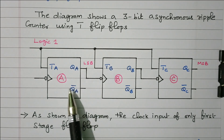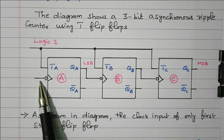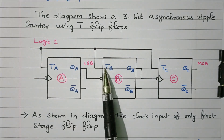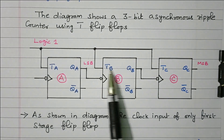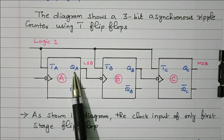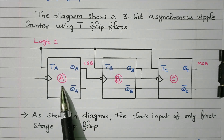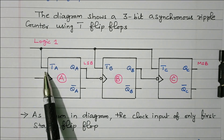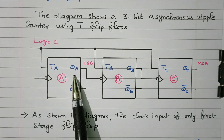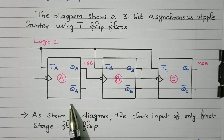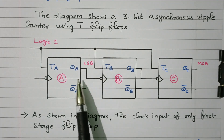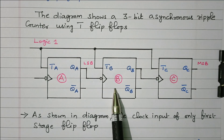The clock pulse is given to the first flip-flop, and the input T for all flip-flops is logic 1. Since T is 1, the output toggles on every clock pulse for flip-flop A. The second flip-flop also has logic 1 as T input, but QA is used as the clock pulse for the second flip-flop, and it is inverted — so it triggers on the negative edge.